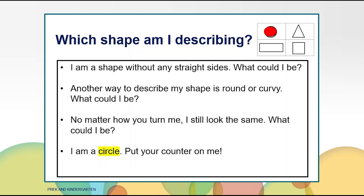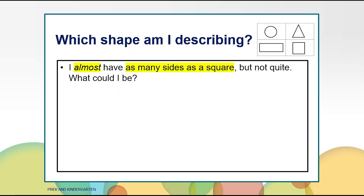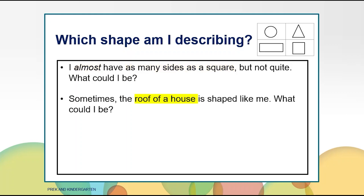Let's try to guess another shape. Here is the first clue: I almost have as many sides as a square, but not quite. What could I be? Put your counter on the shape you think I am talking about. Here is the second clue. I almost have as many sides as a square, but not quite. Sometimes the roof of a house is shaped like me. What could I be? Put your counter on the shape you think I am talking about.